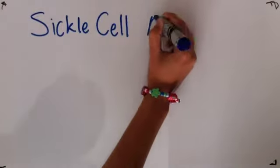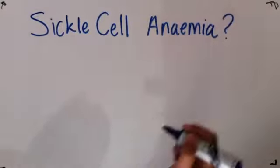Sickle cell anemia, what is it? It's a disease when the red blood cells are not the shape that they should be.